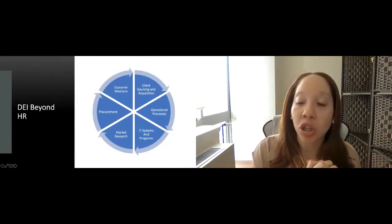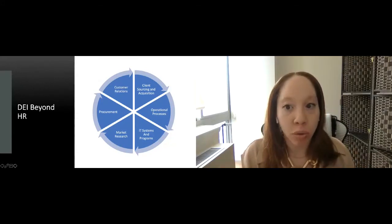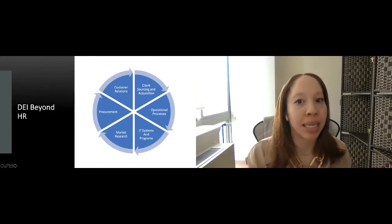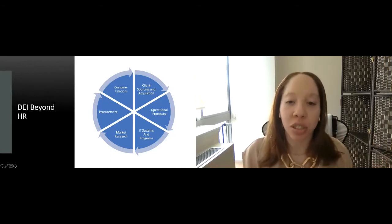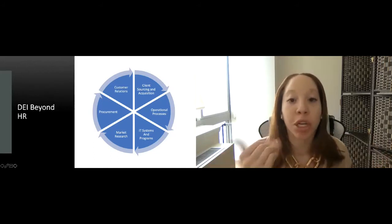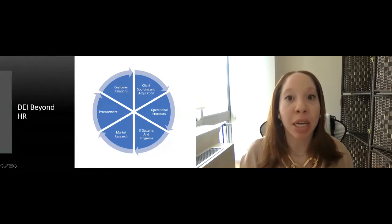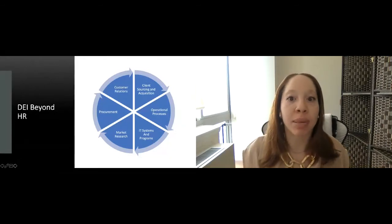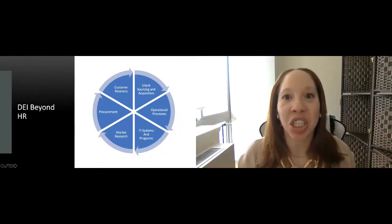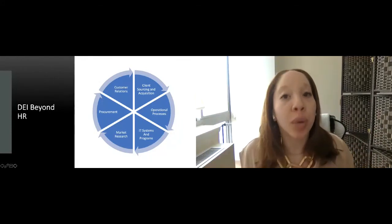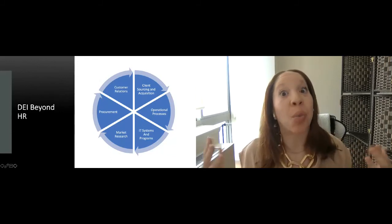So where else can we have D&I beyond HR? So let's look at a couple of examples. So we can have it within client sourcing and acquisition, operational processes, IT systems and programs, market research, procurement, customer relations. The list is really endless. So let's look at procurement. So say we're looking to work with different vendors and other operators. Maybe let's look to make sure that they have a diversity business model. Or let's make sure that they're women-owned or operated. Or let's make sure that they have 30% of their leadership team is women, BIPOC, or non-gender. There's different ways that we can start to set the expectations as a company of who we want to interact with and who we want to do business with based on the standards and goals that we have set as an organization.